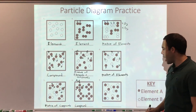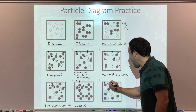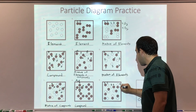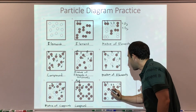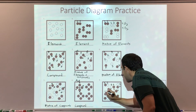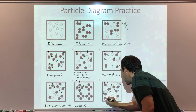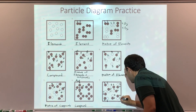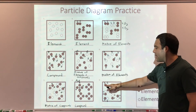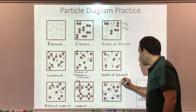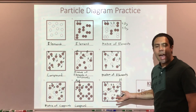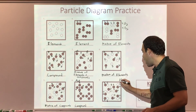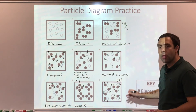And finally, problem number nine — we have element A chemically combined with element B in various orientations. While they look different, they're all the same compound: AB. Some are backwards, some are upside down, but remember these molecules exist in three dimensions. I count nine ABs — they're all the same compound.